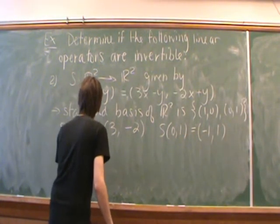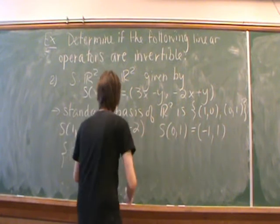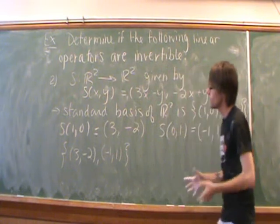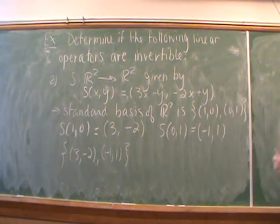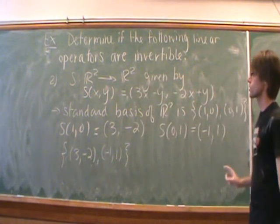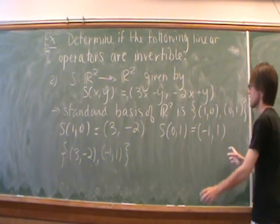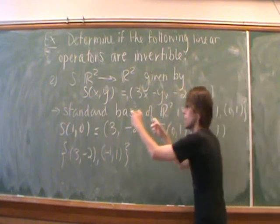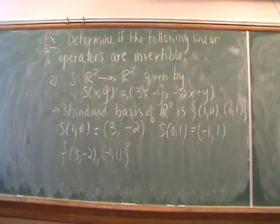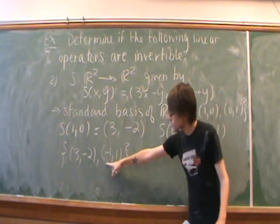So let's take a look at (3, -2) and (-1, 1). S is going to be invertible if these vectors form a basis for R². So remember we had that theory that said if we map a basis to a basis, then our linear transformation is invertible. So is this a basis for R²?